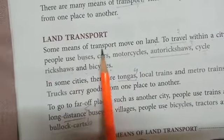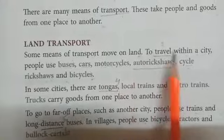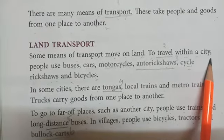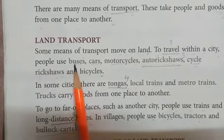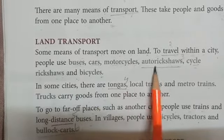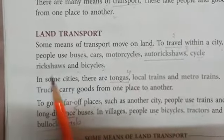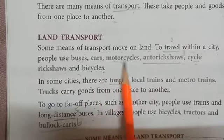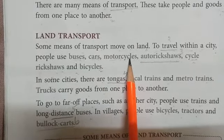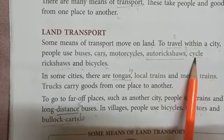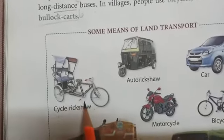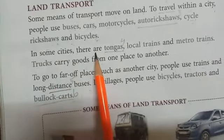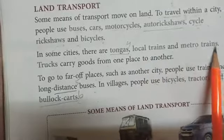Land transport: some means of transport move on land. To travel within a city, people use buses, cars, motorcycles, auto rickshaws, cycle rickshaws, and bicycles. Motorcycle means bike and scooter — all will be included. Cycle rickshaw — nowadays we could not see it, but in a few places they are using it. In some cities there are tongas, local trains, and metro trains.